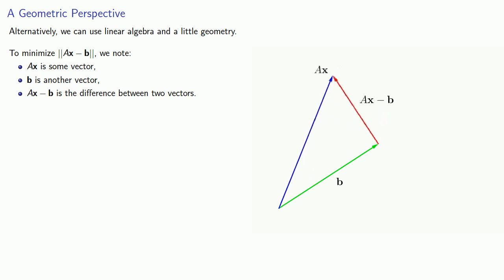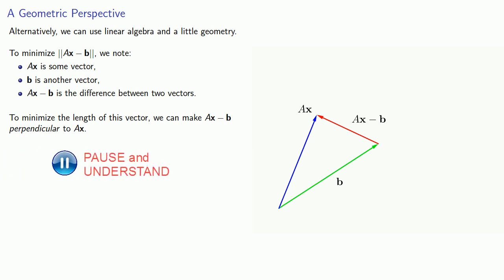And so to minimize the length of this vector, we can make Ax - b perpendicular to Ax. And so from our geometric perspective, we can require Ax · (Ax - b) to be 0.